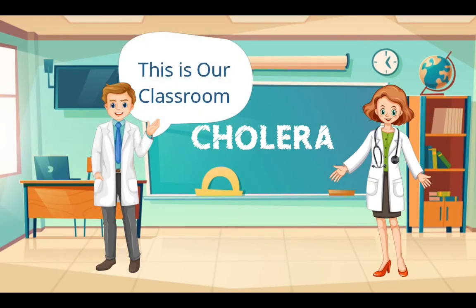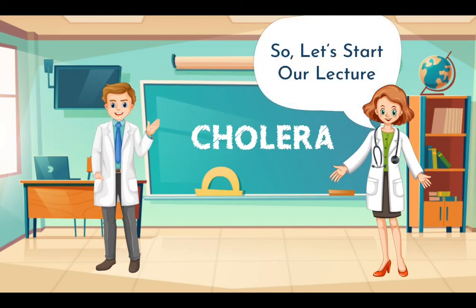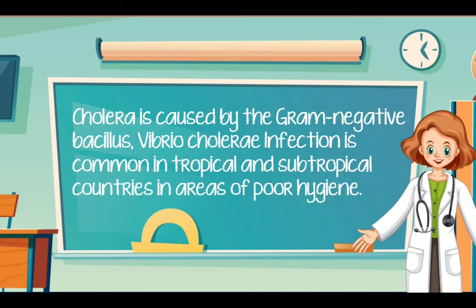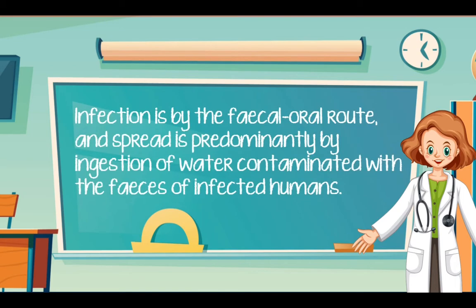This is our classroom. Let's start our lecture. Cholera is caused by the Gram-negative bacillus, Vibrio cholerae. Infection is common in tropical and subtropical countries, and in areas of poor hygiene. Infection is by the faecal-oral route, and spread is predominantly by ingestion of water contaminated with the feces of infected humans.